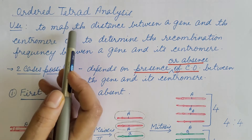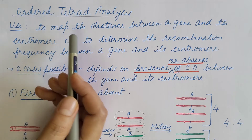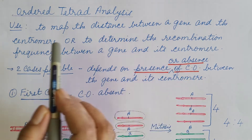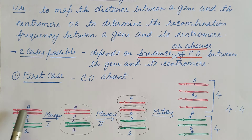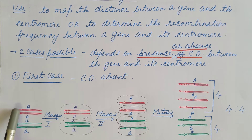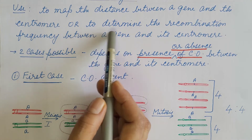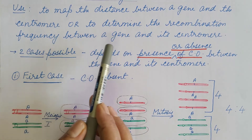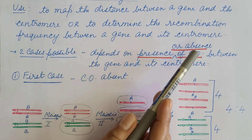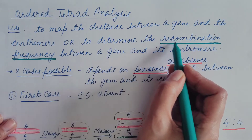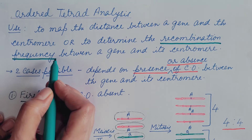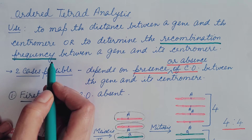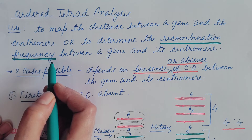Tetrad analysis is used to map the distance or determine the distance between a gene and the centromere, or to determine the recombination frequency between a gene and its centromere. You can understand recombination frequency in my video on genetic mapping; the link is given in the description box.